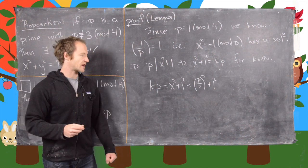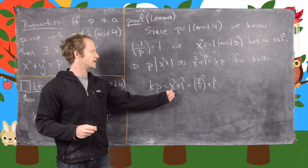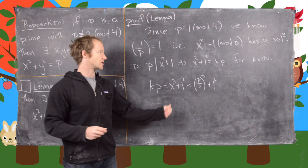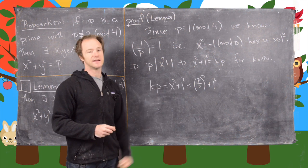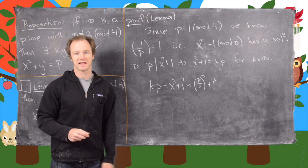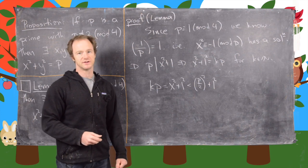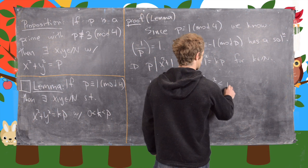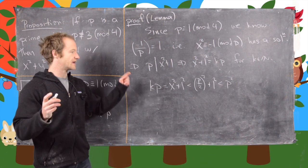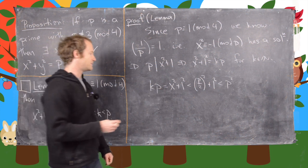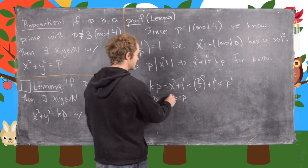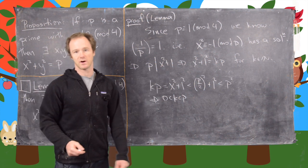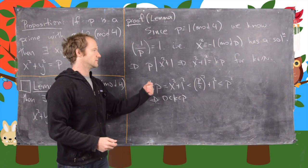By the theory of quadratic residues, we know x is going to be a square root of minus 1 mod p, which means we can take the solution that's less than p over 2. There are two solutions to this congruence — one is less than p over 2 and one is greater than p over 2, so we take the one that's less. Now notice that's less than p squared, and dividing both sides of this inequality by p, we end up with k is less than p. And we obviously know that k is bigger than 0 because x squared plus 1 can't equal 0 as an integer.